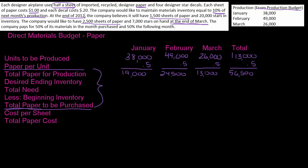Now I have to do my desired ending inventory. Remember, desired ending inventory is the amount of inventory I want to have to start off the next month. The company would like to maintain materials inventory equal to 10% of next month's production. So for January's ending inventory, we need 10% of February's production: 24,500 times 10% is 2,450. For February's ending inventory, we want 10% of March's need — 10% of 13,000 in inventory at the end of February.